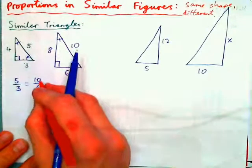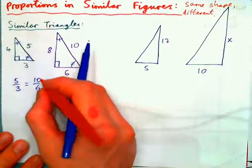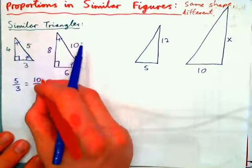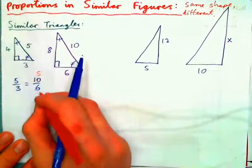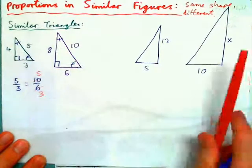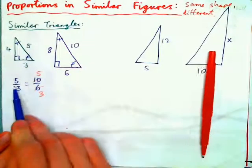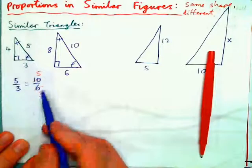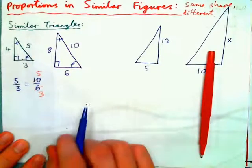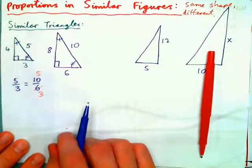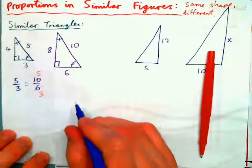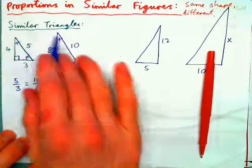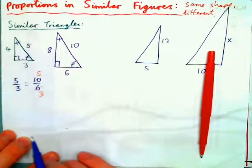And if we put this in lowest terms, 2 into 10 goes 5 times, 2 into 6 goes 3 times, so we have 5 over 3 equals 5 over 3. That makes sense. And there are lots of proportions we can find with these two triangles.